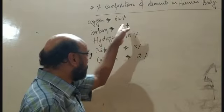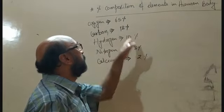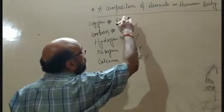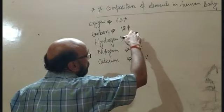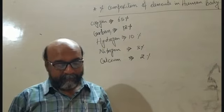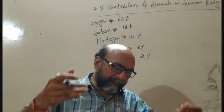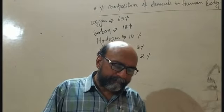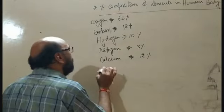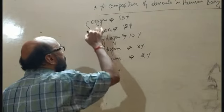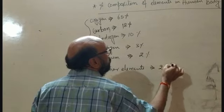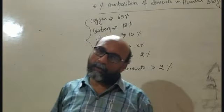Adding these percentages: 65 + 18 + 10 + 3 + 2 = 98%, which means only about 2% accounts for all other elements. So the main constituents are those few elements, and all other elements together make up about 2%. This is all about elements.